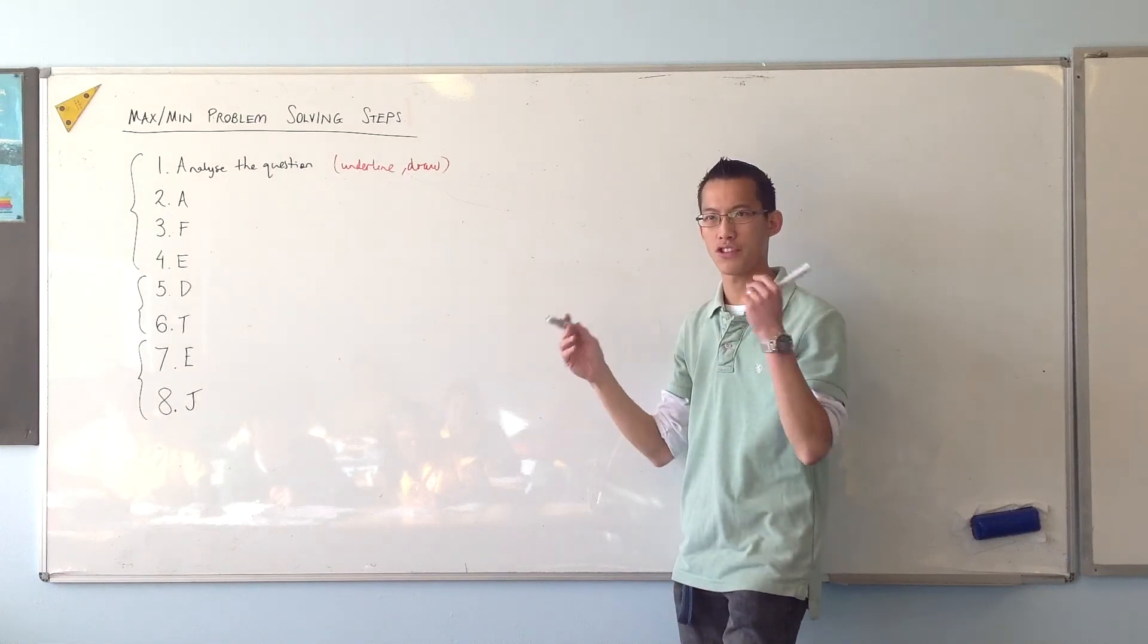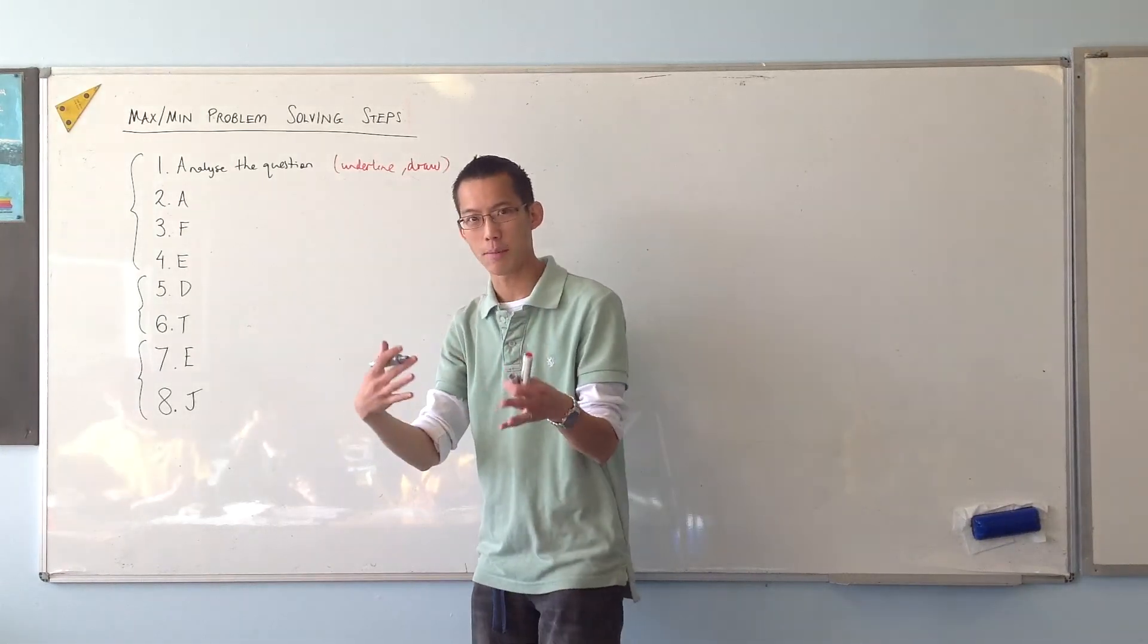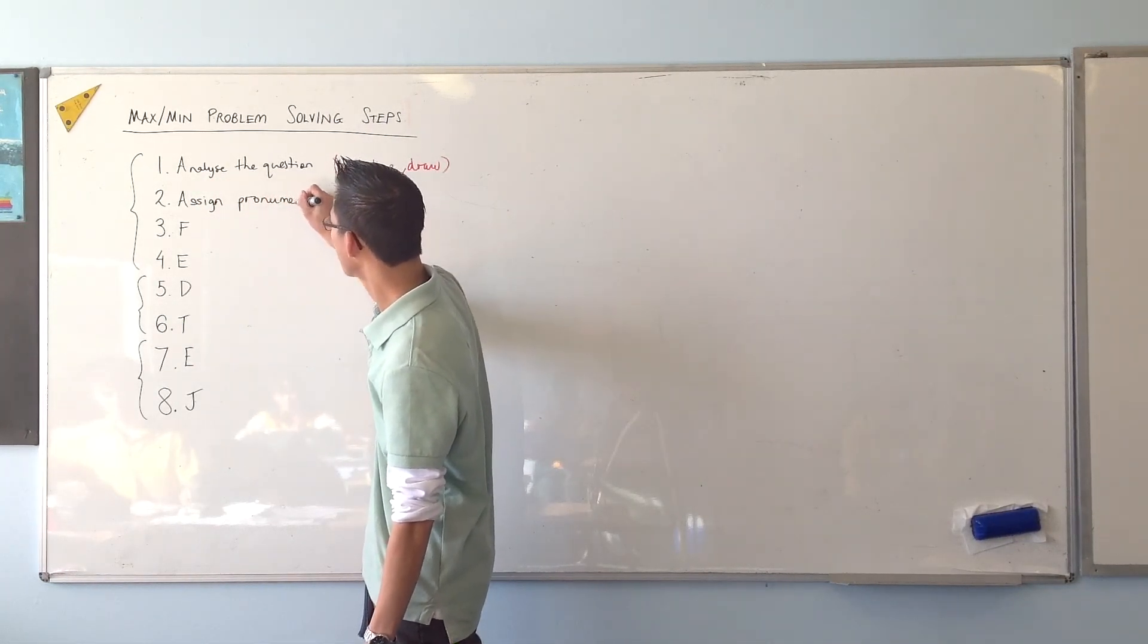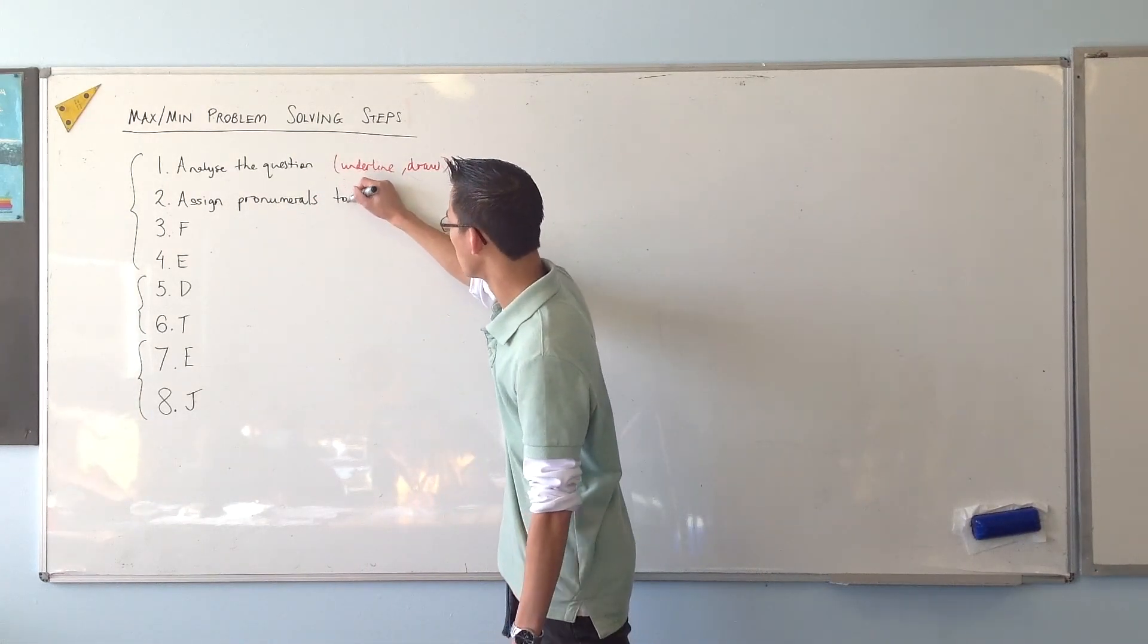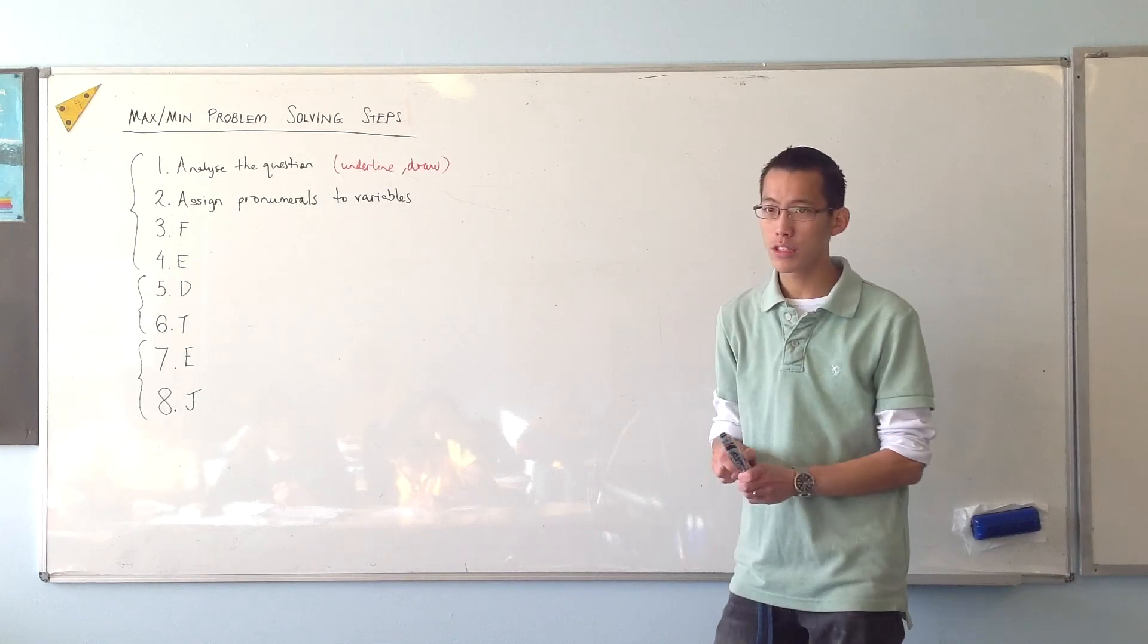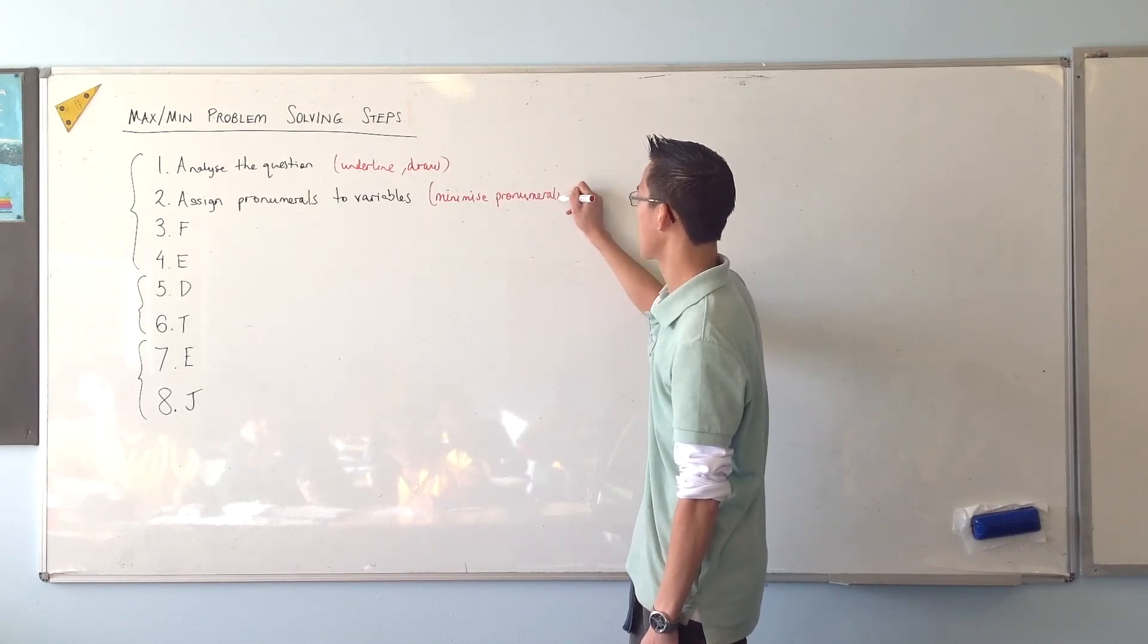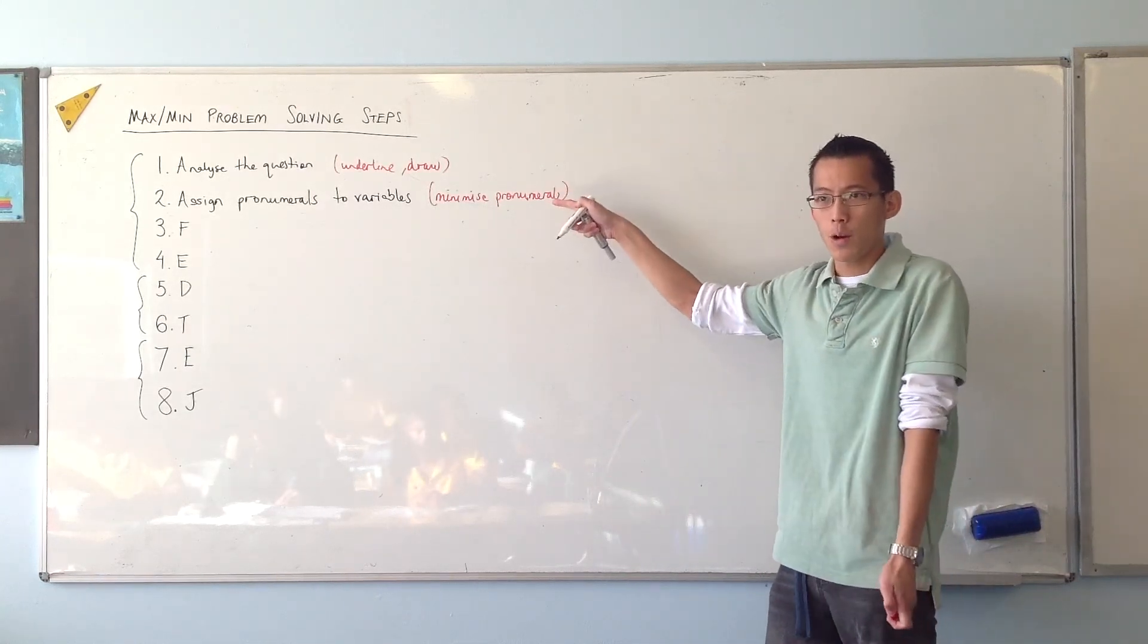Second thing you got to do is remember the question just says try and maximize this or that, and these different things can change. So in order to actually talk about and form some mathematical statements, you need to assign some pronumerals. Now anything that can vary in the question, the variables, anything that can vary can have a pronumeral on it. But you probably try to minimize the number of pronumerals you have. Because if you have lots and lots, later on you're just gonna have to get rid of more of them. In fact, we just want to get sort of towards one or two. So have as few pronumerals as you can.